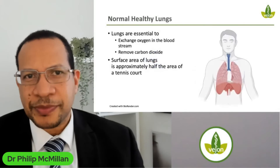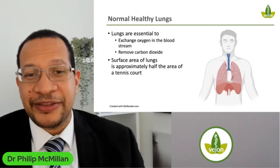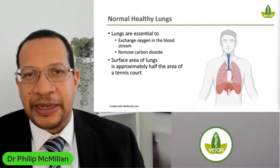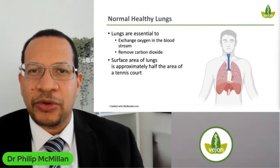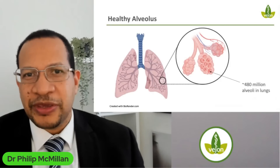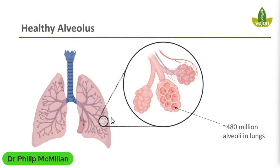To get the basics right: normal healthy lungs are essential — this is how you breathe. You breathe in, oxygen comes in from the air and exchanges into the blood, while carbon dioxide is removed. Oxygen is transported in red blood cells around the body. The surface area of the lung is approximately half the area of a tennis court when you break it down into all the alveoli. In severe COVID-19, when a significant number of these alveoli are damaged, that is how death occurs.